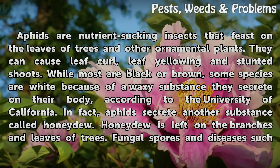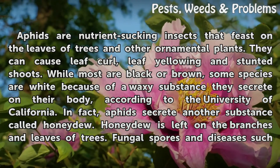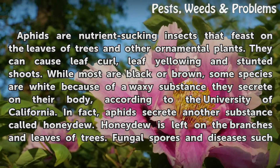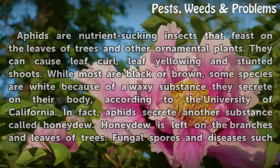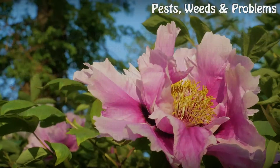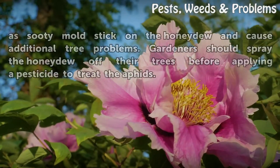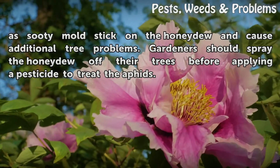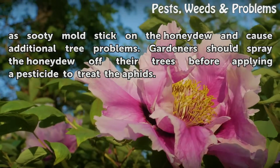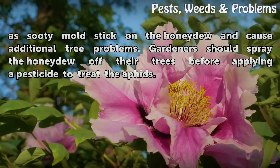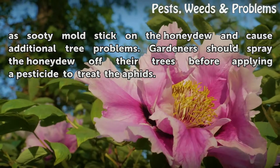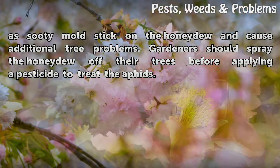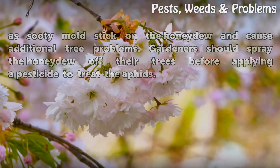Aphids secrete another substance called honeydew, which is left on the branches and leaves of trees. Fungal spores and diseases such as sooty mold stick to the honeydew and cause additional tree problems. Gardeners should spray the honeydew off their trees before applying a pesticide to treat the aphids.